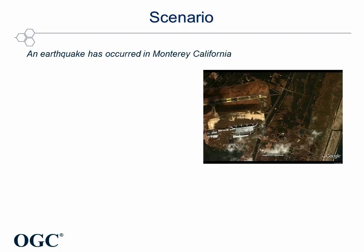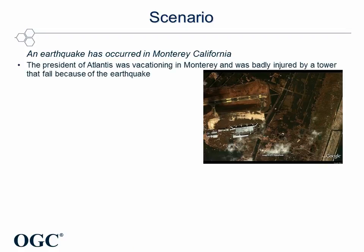The scenario in which the client application capabilities will be demonstrated is Monterey, California, where an earthquake has occurred. The President of Atlantis was vacationing in the Monterey area and was badly injured by a tower that fell because of the earthquake, and he needs to find the fastest route to the hospital.